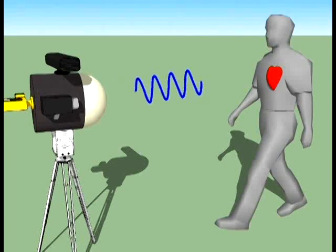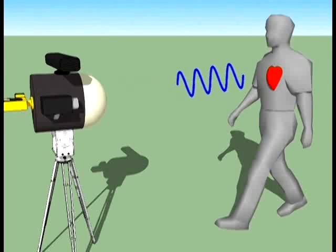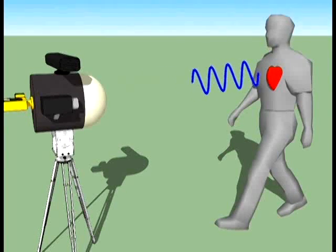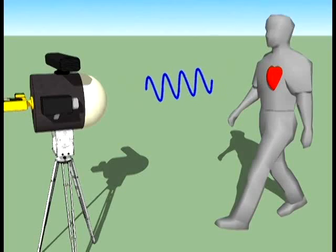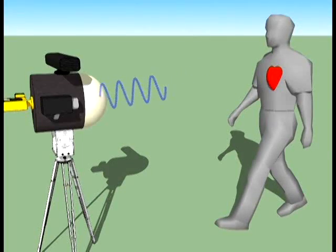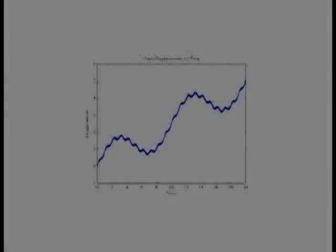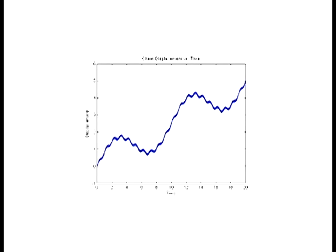As the wave reflects from the target, its phase is shifted proportionally to the movement of the target. The phase can be extracted, and the displacement of the target can be demodulated. When the system is aimed at a human's chest, we can see the chest's movement.